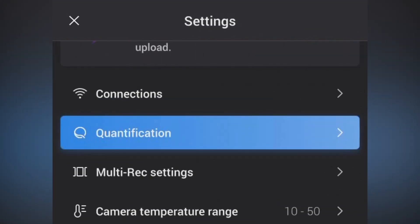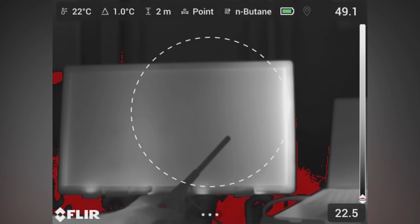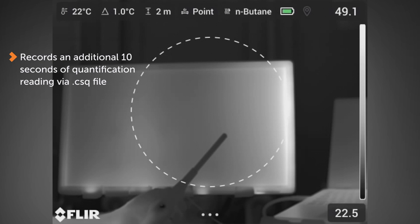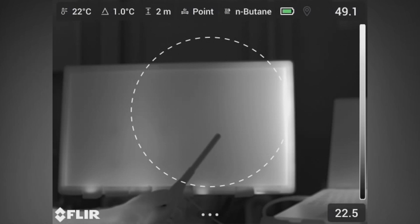Now you've set the camera up to do a post-analysis which will happen after you run your quantification feature. You'll run your 10-second quantification, have a quick pause to show a visual camera, and then it will record an additional 10 seconds of your quantification reading via the csq file for post-processing using FLIR QL320 and other quantification solutions.